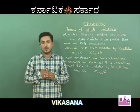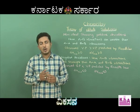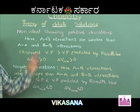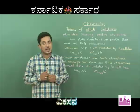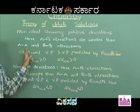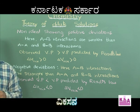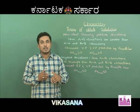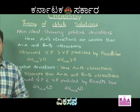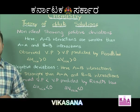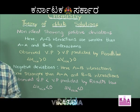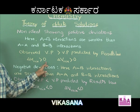Non-ideal solutions can be grouped into two types: positive deviation and negative deviation from Raoult's law. In non-ideal solutions showing positive deviation, the A-B interactions are weaker compared to A-A and B-B interactions. Since the interactions are weaker, the escaping tendency of molecules increases, so the observed vapour pressure is greater than that predicted by Raoult's law. Hence delta V > 0 and delta H > 0.